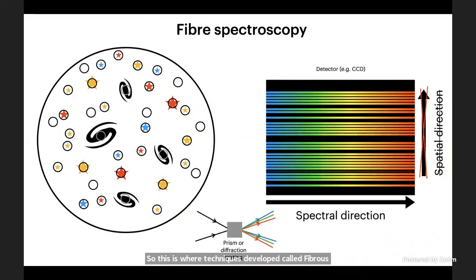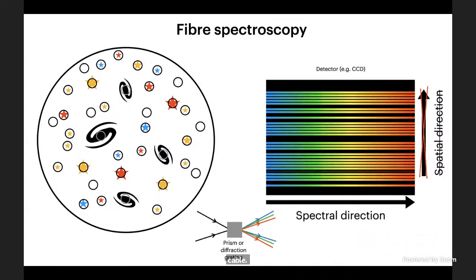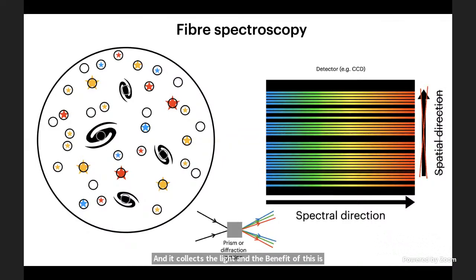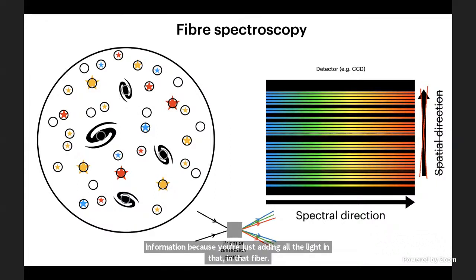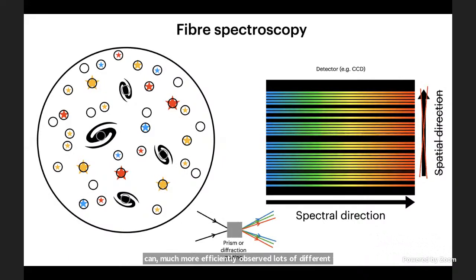This is where a technique called fiber spectroscopy was developed. Instead of blocking off the light, you collect the light on the part of the sky you're interested in using a fiber optic cable — exactly the same kind of stuff that runs your internet cables. The benefit is that you can put those fibers anywhere on the sky, transmit the light through the telescope to your spectrograph, bundle those all together, and be very flexible. You lose some spatial information because you're adding up all the light in that fiber, but you win in the fact that you can much more efficiently observe lots of different targets.